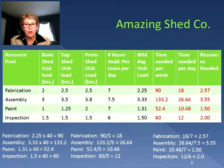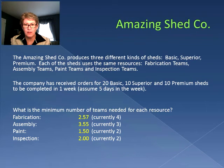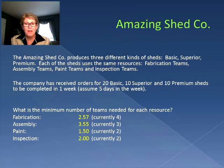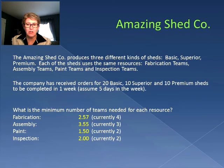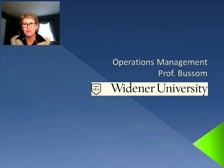Looking at the overall picture: we currently have four fabrication teams but only need 2.57. Assembly, which was our bottleneck, currently has three teams but actually needs 3.55. Paint currently has two teams and needs one and a half. Inspection currently has two and needs two. So we have excess capacity in fabrication and not enough capacity in assembly. When thinking about changes for the Amazing Shed Company, we'd reduce the number of teams in fabrication and increase them in assembly. Capacity analysis helps us understand that placing the right resources in the right locations really improves our throughput. I'll see you for part two.